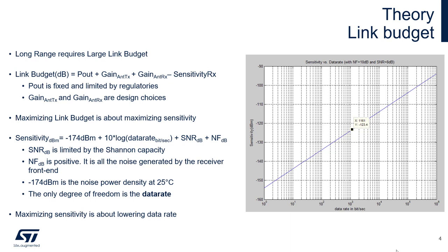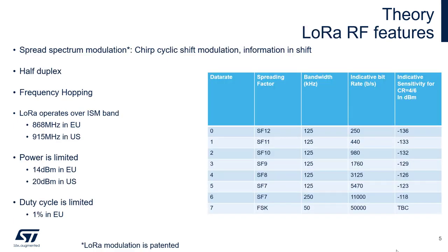This chart shows that the lower the data rate — data rate is on the x-axis, with 10^0 being one bit per second — the better the sensitivity. The key message: you can reach the expected distance of communication, but the cost is the data rate. And what is the cost of lowering data rate? Energy.